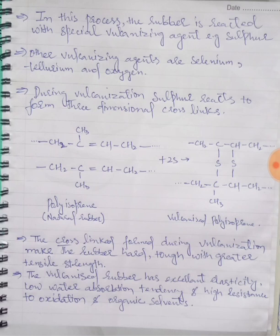For example, we use sulfur. Other vulcanizing agents are selenium, tellurium, and oxygen.